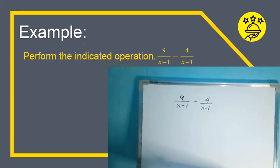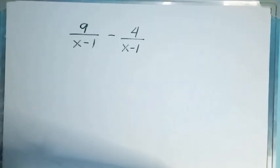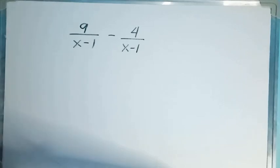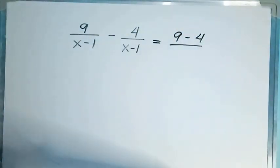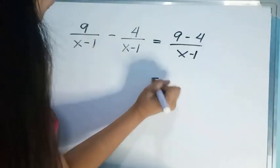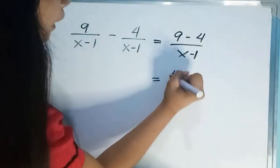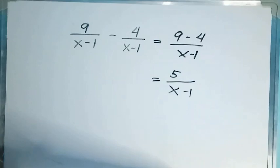Let us have the given example. Perform the indicated operations: 9 over (x minus 1) minus 4 over (x minus 1). You can notice that they have the same denominator, which means this is a similar fraction. So, if it's a similar fraction, you can just add or subtract the numerator. So, we have 9 minus 4 over the denominator x minus 1. The final answer is 5 over x minus 1.